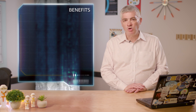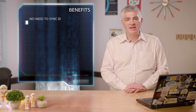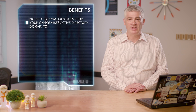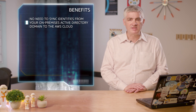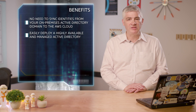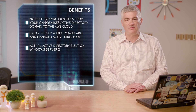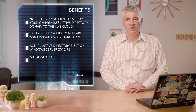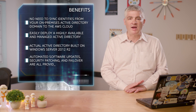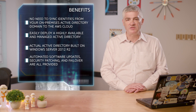By using AWS Microsoft AD, you do not have to synchronize identities from your on-premises Active Directory domain to the AWS cloud. With just a few clicks, you can deploy a highly available and managed Active Directory that is built on actual Windows Server 2012 R2. Automated software updates, security patching, and failover are all provided as part of the service.